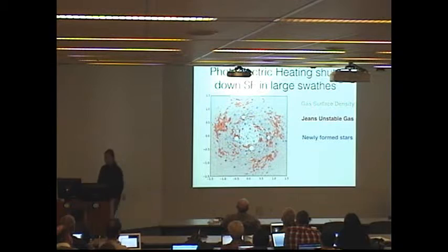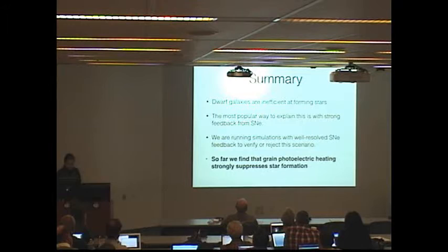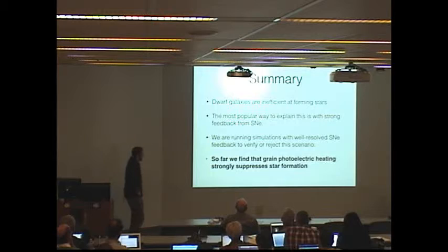I'm close to out of time, and I want to leave some time for questions, so I'll just end there. Let's say that in these galaxies, grain photoelectric heating strongly suppresses star formation, whereas supernovae do not.